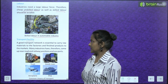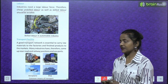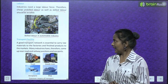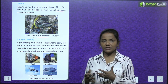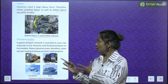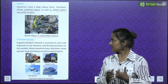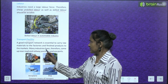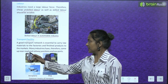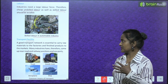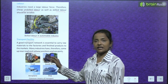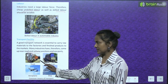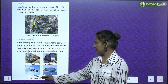Transport facility: a good transport network is essential to carry raw materials to the factories and finished products to the markets. Many industries have therefore come up near road and railway junctions and seaports. Means of transportation include truck, train, aeroplane and ship.